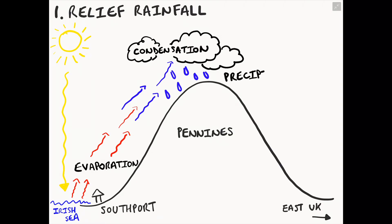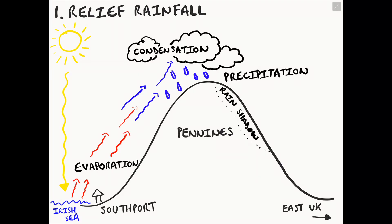These clouds eventually will become large enough to create precipitation, which is any form of water vapour that comes out of the sky — rain, hail, sleet and snow. Our rain shadow is on the east side of our mountain, and this is where excess drizzle will land.